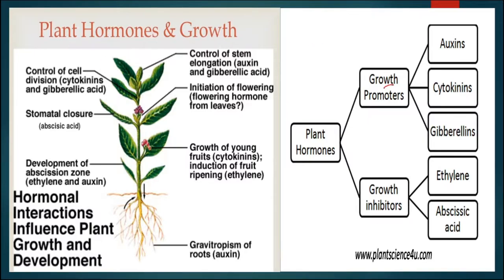Plant growth regulators are categorized into two types: growth promoters and growth inhibitors. Growth promoters include auxin, cytokinin, and gibberellin, whereas growth inhibitors are ethylene and abscisic acid. Ethylene is present in gaseous form. ABA is also known as the ABA hormone. These hormones control different activities: stomata closing and opening is controlled by abscisic acid and cytokinin; development of the abscission zone is controlled by ethylene and auxin; growth of young fruits is controlled by cytokinin; ripening of fruit is controlled by ethylene; and root development is under the control of auxin.